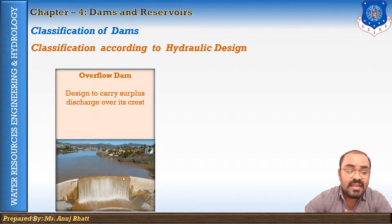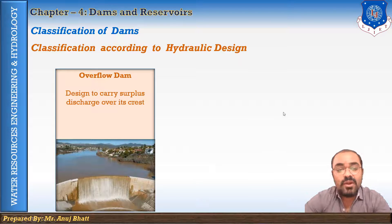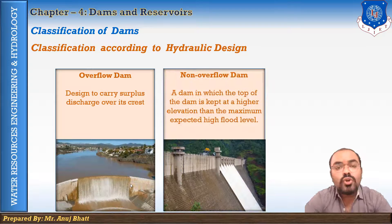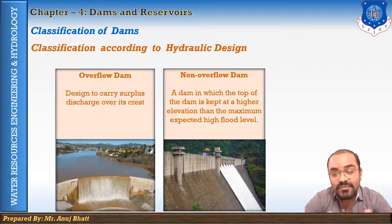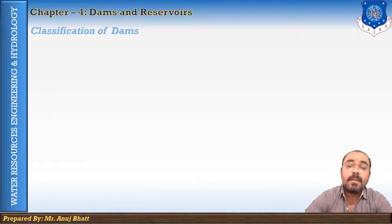The crest level is below the top level so that water from the reservoir can easily flow to the downstream side of the dam. Such dams are generally made of concrete or masonry, and an overflow dam is commonly known as a spillway. A non-overflow dam is one in which the top of the dam is kept at a higher elevation than the maximum expected high flood level, so water is not permitted to overtop the dam. Examples include gravity dams and rock fill dams.